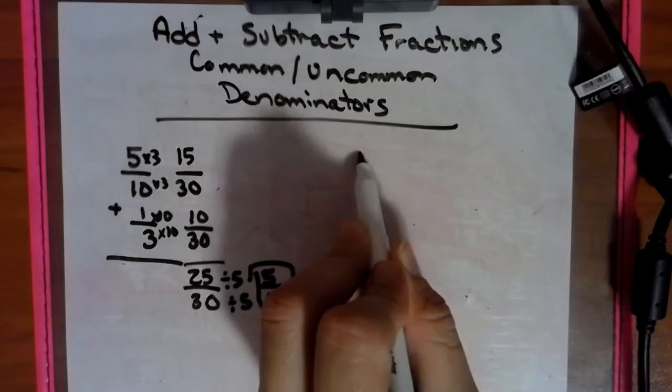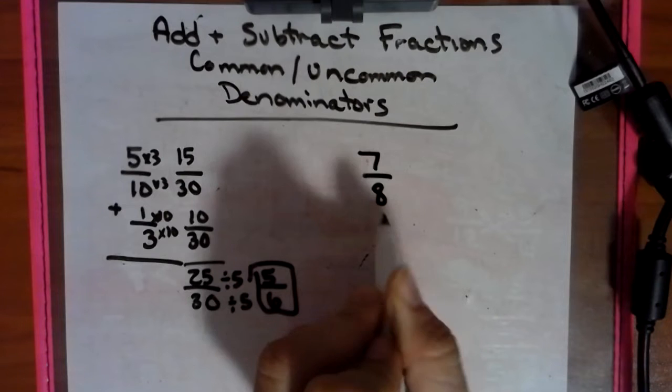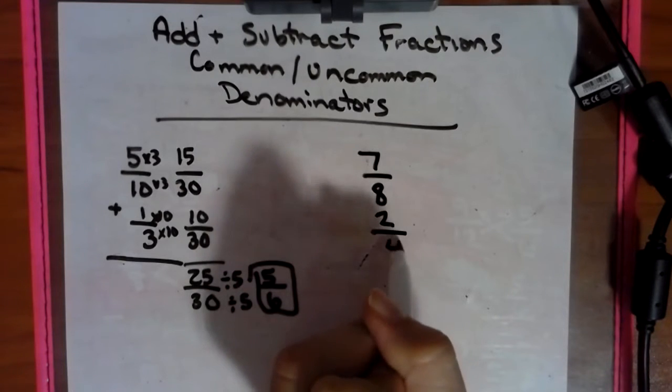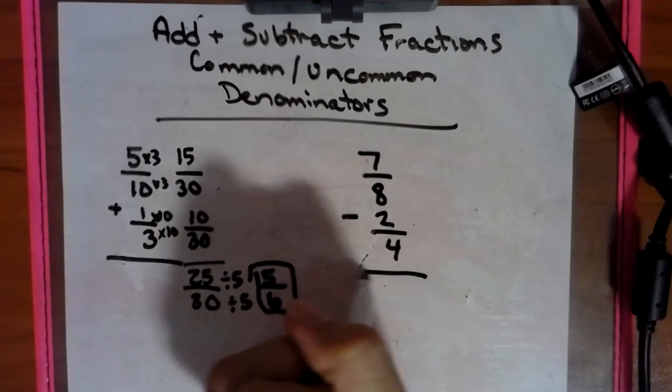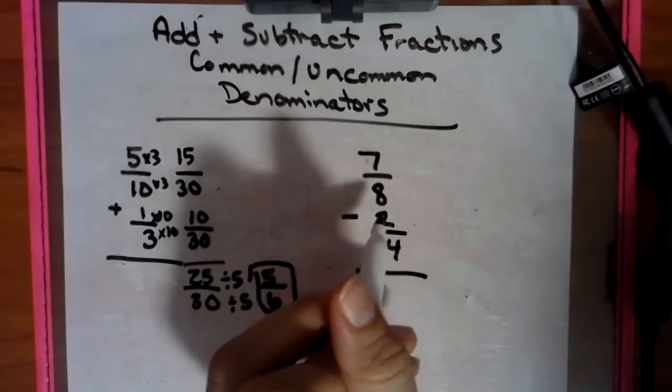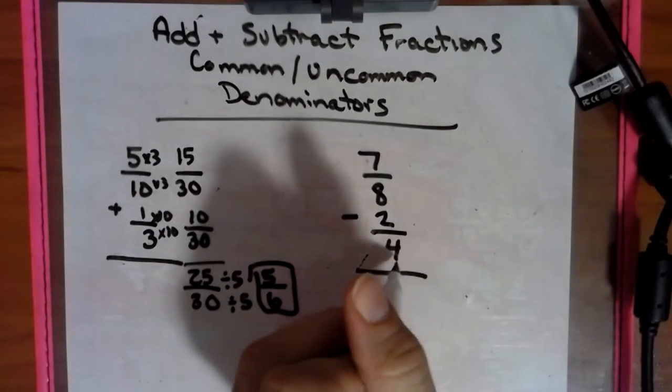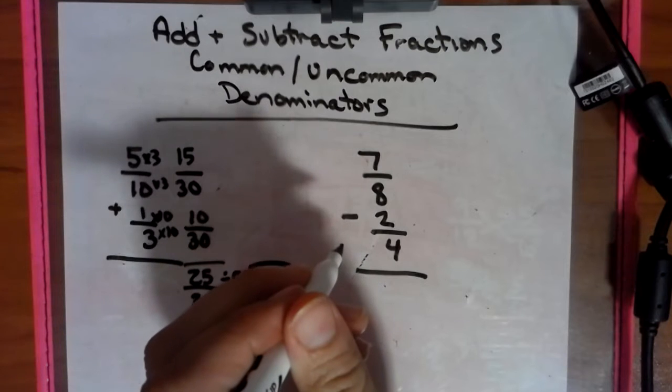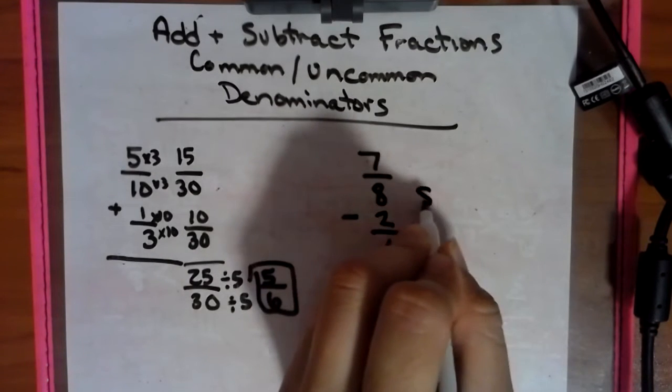So if we have, let's say, 7 eighths, and then we have 2 fourths, and we want to subtract these. First thing I ask myself, can the smaller denominator become the bigger denominator? Can I count by 4s and land on 8? So let's see. 4, 8, yes. So we're going to use 8.